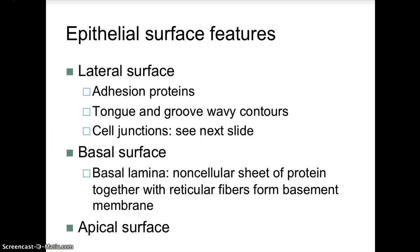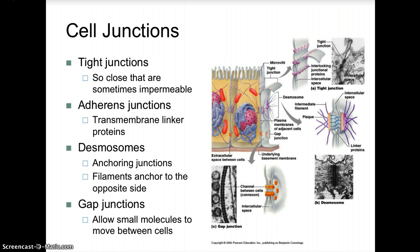We ended our last lecture talking about the epithelial surface features such as lateral surface features, basal surface features, and the apical surface features. We ended that discussion with talking about cell junctions such as tight junctions, adherent junctions, desmosomes, and gap junctions.